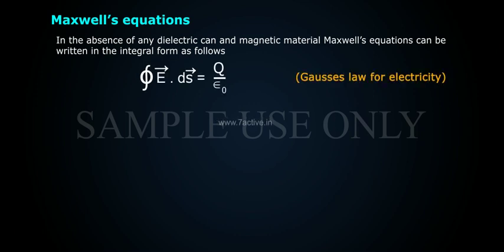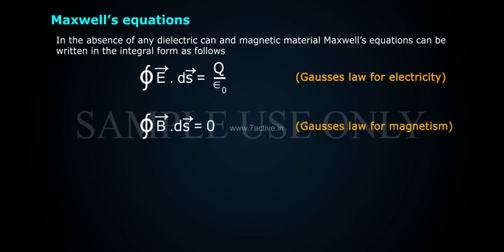One: Surface integral of E⃗·ds⃗ equals Q by ε₀, Gauss's law for electricity. Two: Surface integral of B⃗·ds⃗ equals 0, Gauss's law for magnetism.